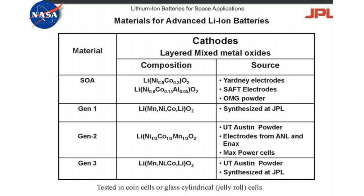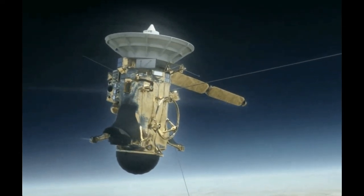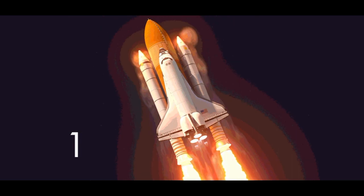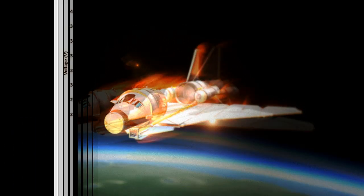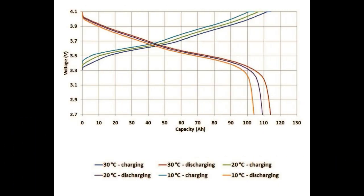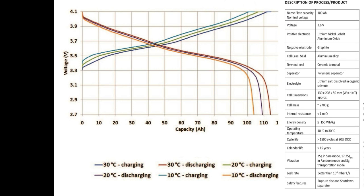Generation 1, Generation 2, and Generation 3 lithium-ion cells form the third generation of power sources for satellites. Presently, indigenous 50 ampere-hour lithium-ion cells are qualified for satellite applications. In order to meet the increased power demands of satellites like the 14k and 16k bus, 100 ampere-hour lithium-ion cells are being developed. Currently, ISRO spacecraft are powered by imported lithium-ion cells, and the performance characteristics of the 100 Ah cell at various temperatures are shown here.